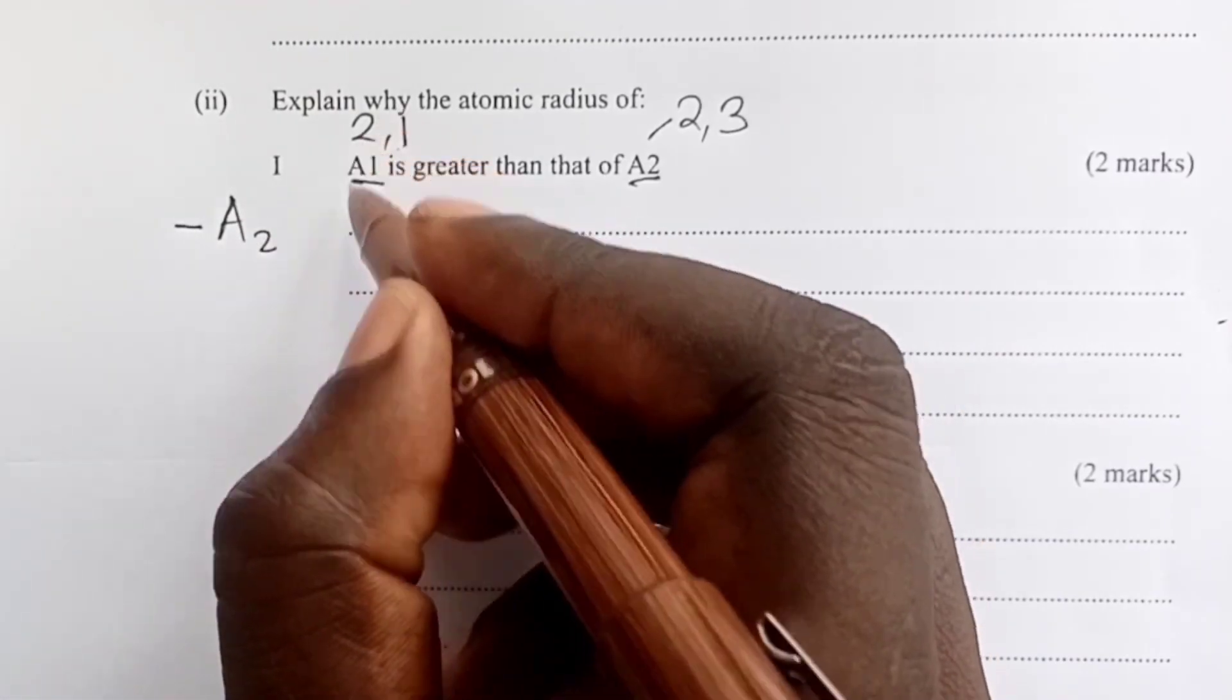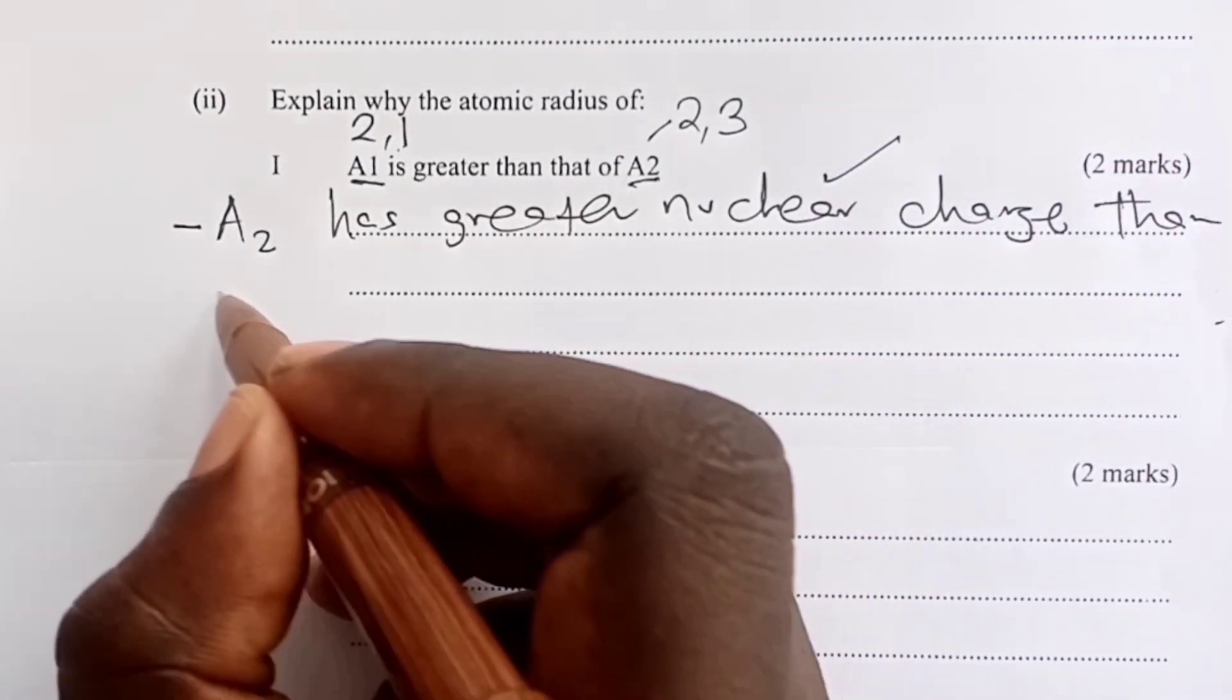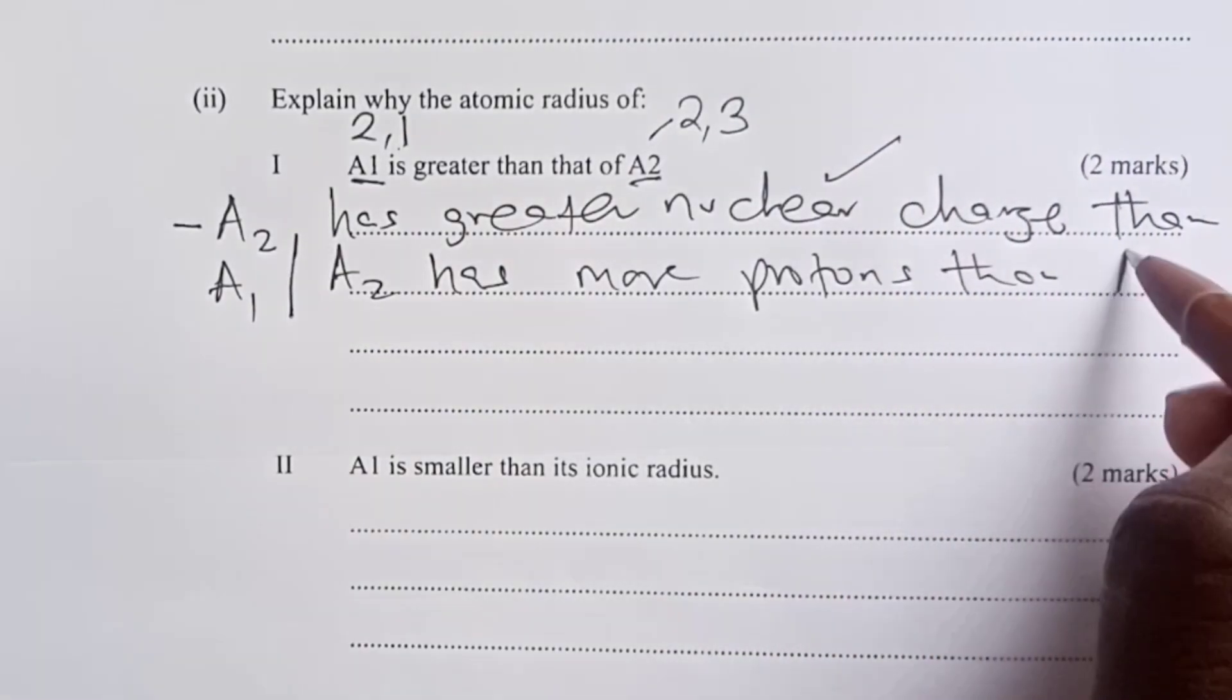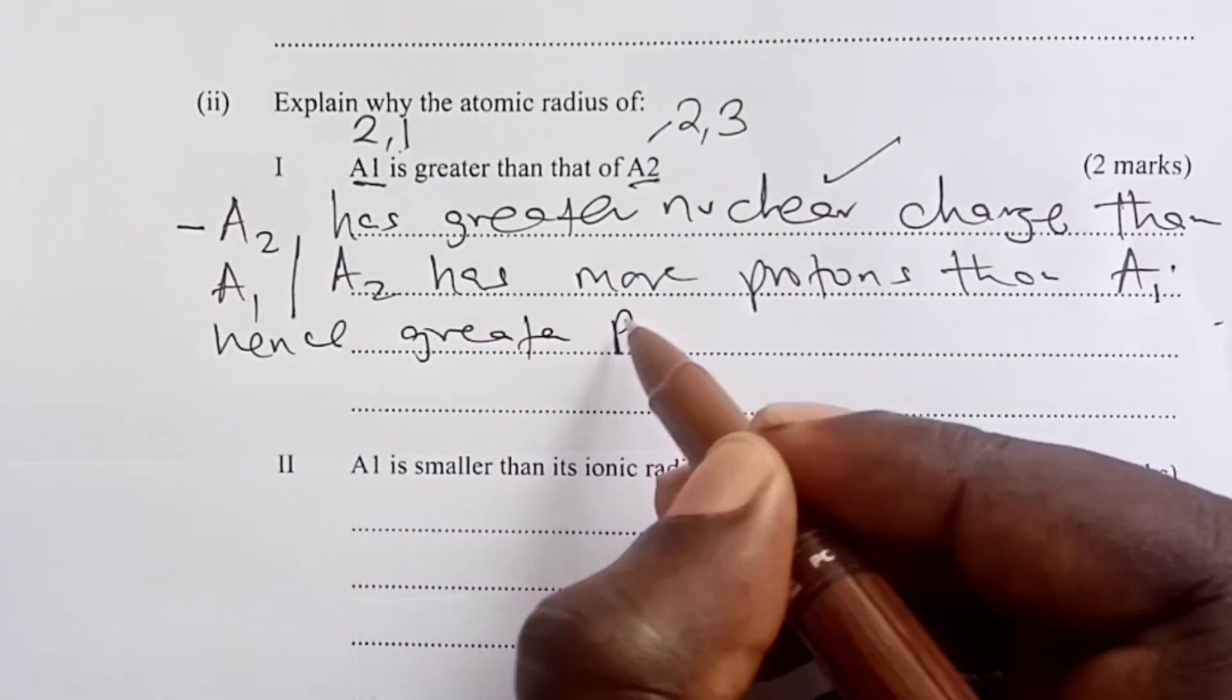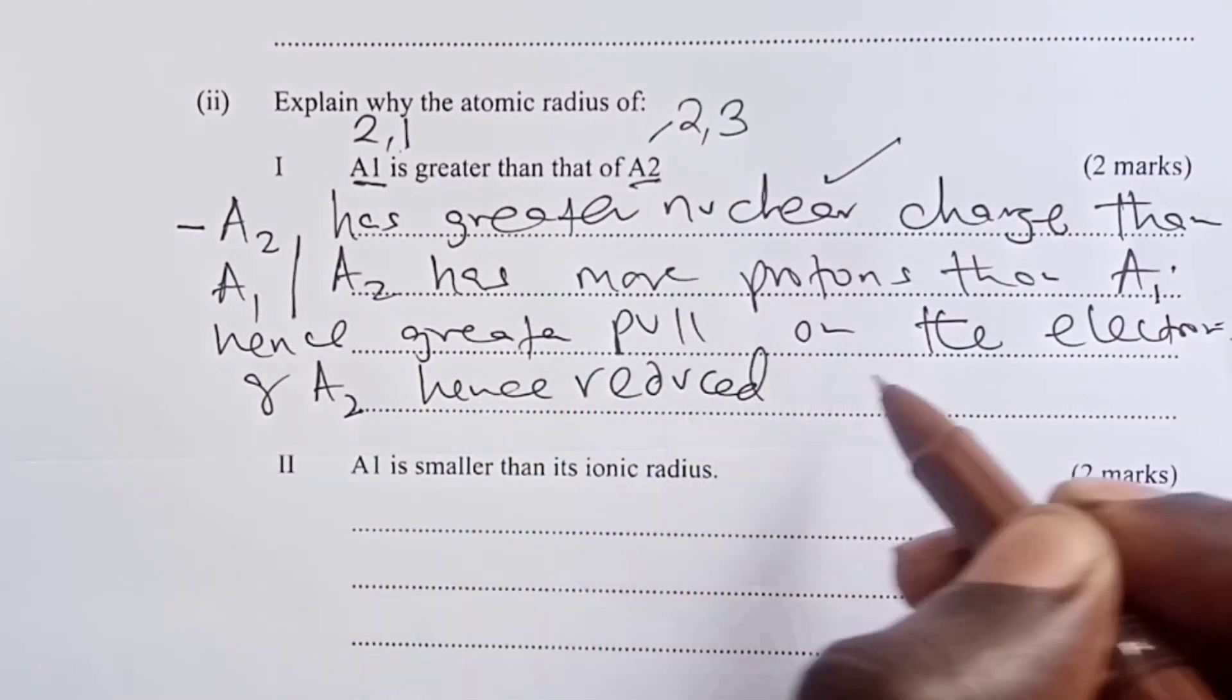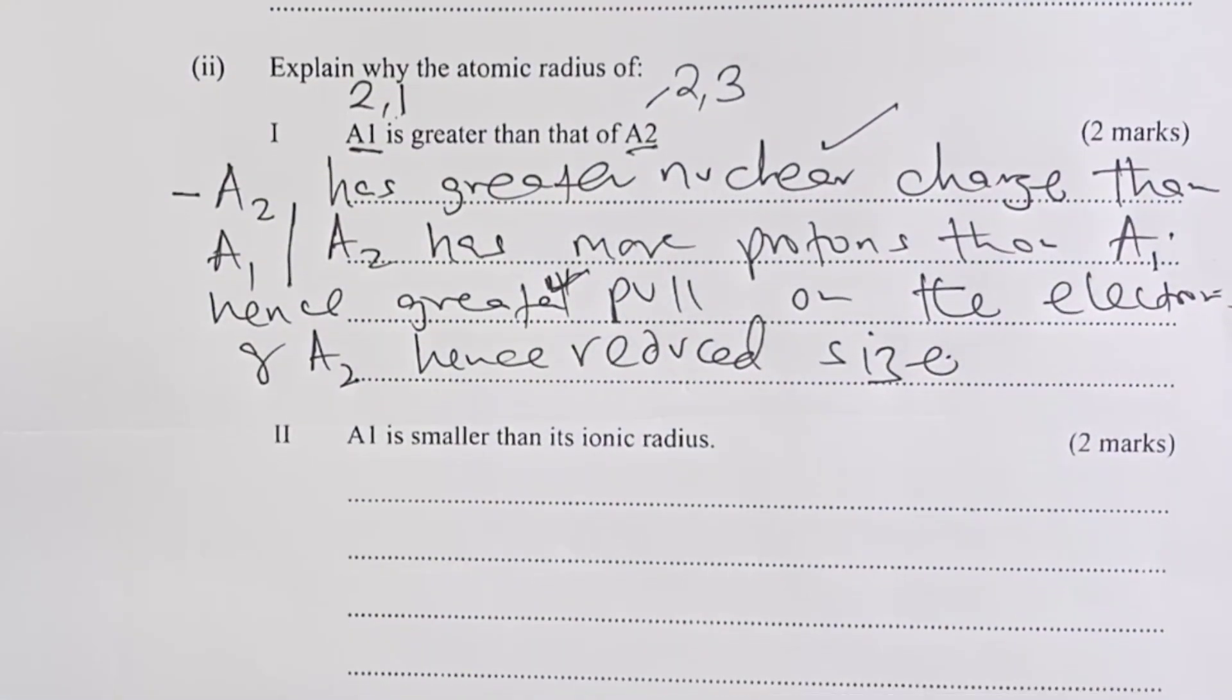That's what makes its atomic radius to be smaller than that of A1. So the expected answer here would have been A2 has greater nuclear charge for the first mark as compared to A1. Another reason a student can give is that A2 has more protons than A1. So then what happens is that there is greater pull on the electrons of A2, hence reduced size as compared to A1.